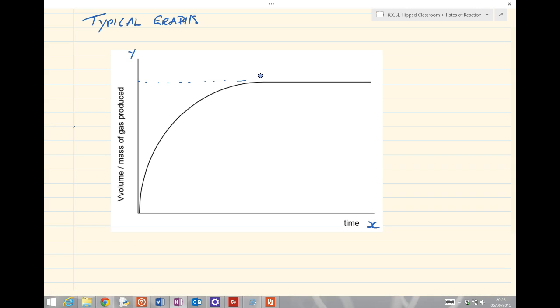Yep, so that is because the reaction stopped and no more product is being produced. The rate of reaction, which bit of the graph do you think that's related to? That's right, it's the slope. So the slope is equal to the rate of reaction.